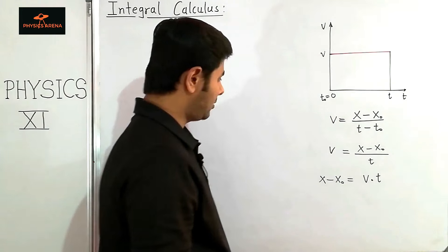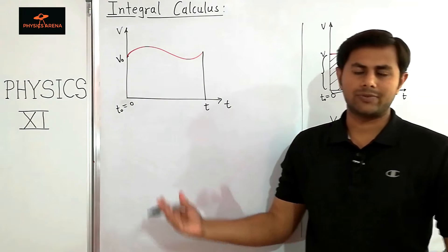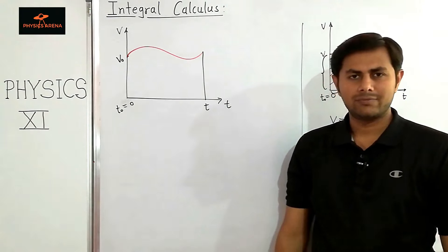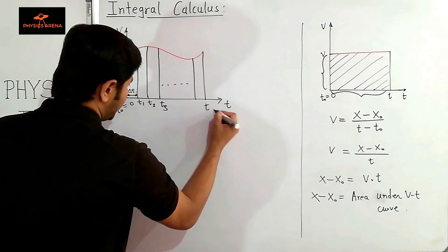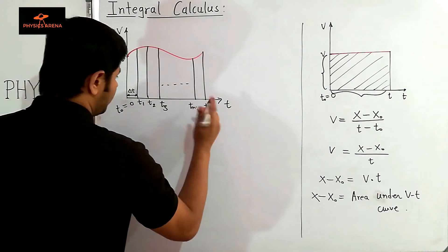We have taken starting time t₀ equals zero. Substituting, we get x minus x₀ divided by t equals v, and rearranging, x minus x₀ equals v times t. Notice that v is one side and t is the other side of this rectangle, so v times t gives us the area under that rectangle — the shaded area. So I can say change in position is given by area under the velocity versus time curve.